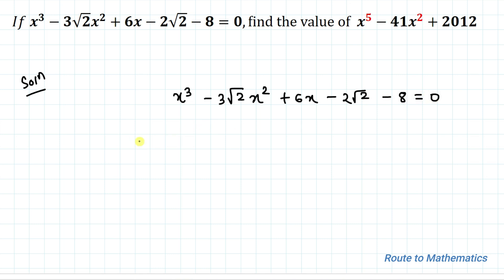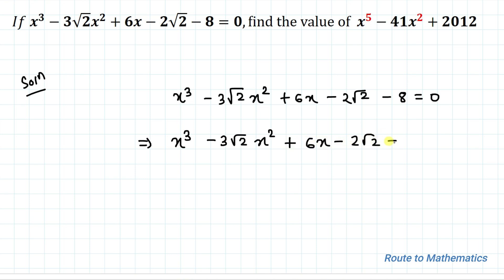In the next step we can write this equation as x³ - 3√2·x² + 6x - 2√2 = 8, by taking the 8 to the right-hand side.